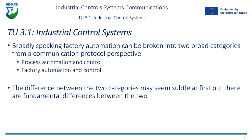Broadly speaking, factory automation can be broken into two broad categories from the communications protocol perspective: process automation and control, and factory automation and control. Process automation is focused on the individual processes within the factory, while factory automation tries to take a holistic view. At a high level the two may seem very similar, or the differences might seem very subtle, but the fundamental differences are there.